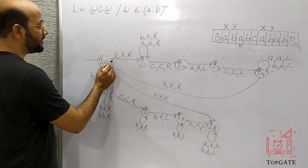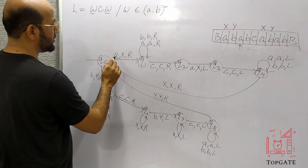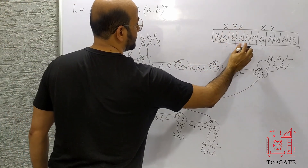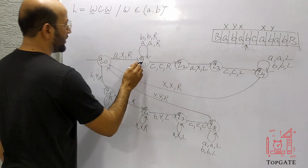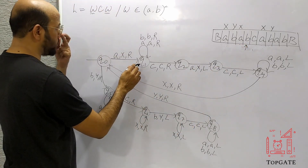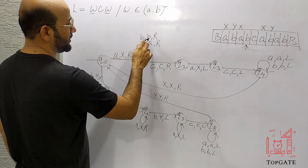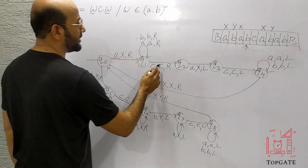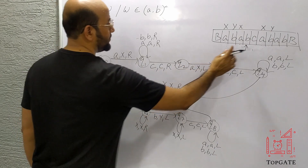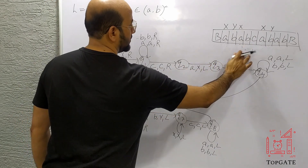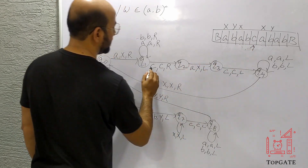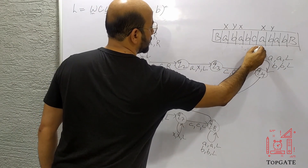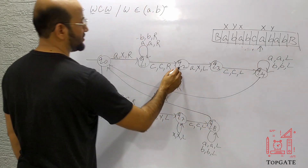Now machine is at Q0 and it finds A. So the machine takes this move: this A will be changed to X and the pointer will point to this B, machine at Q1. At Q1 it will skip all the B's, then find C — the C will be skipped. The pointer will now point to the next character and the machine is at Q2.